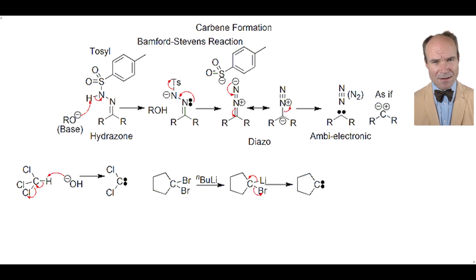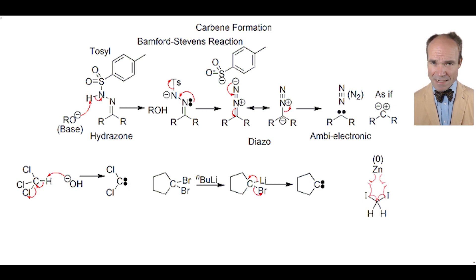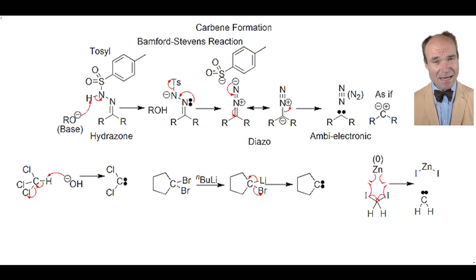Lastly, when a 1,1-diiodide is exposed to zinc, the carbene is produced with a radical process. In the presence of an alkene, a Simmons-Smith cyclopropanation is performed.